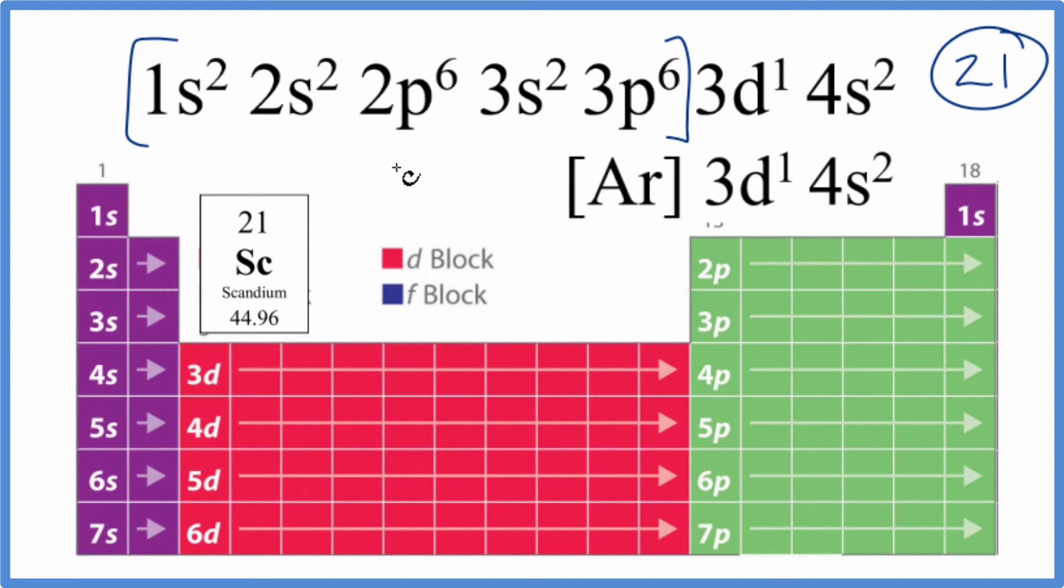So we have 1s¹, 1s², s is full, 2s², 2p¹ through 6, so p is full with 6, 3s², 3p⁶.